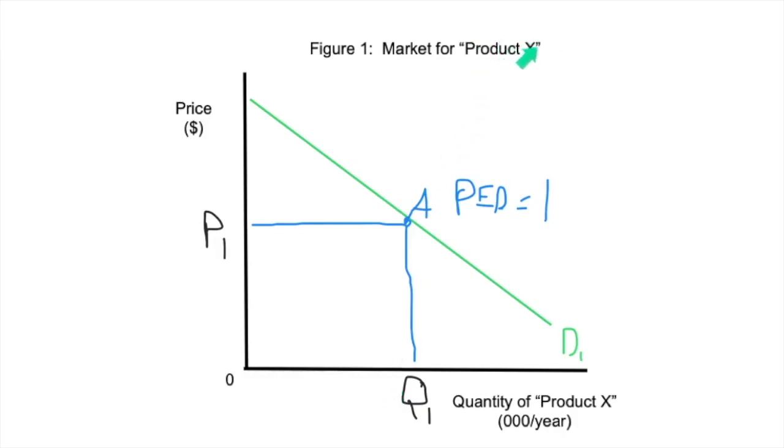So for our product, whatever it is, product X, it could be anything, it could be phones, glasses, pillows, anything. At this point of the demand curve, we know that price elasticity of demand equals one, which means that any point below that point will be the inelastic portion of the demand curve. And this is going to be the elastic portion of the demand curve. And the reason we know that is that the percentage change in the quantity demanded versus the percentage change in the price of good X is going to result in a number greater than one up here and less than one down here.